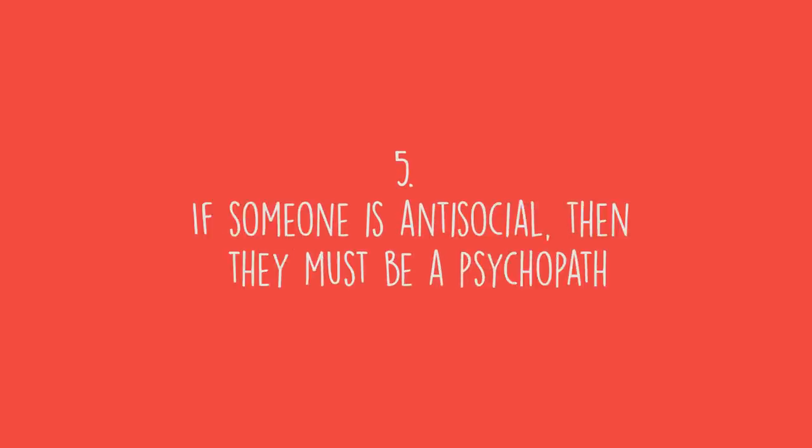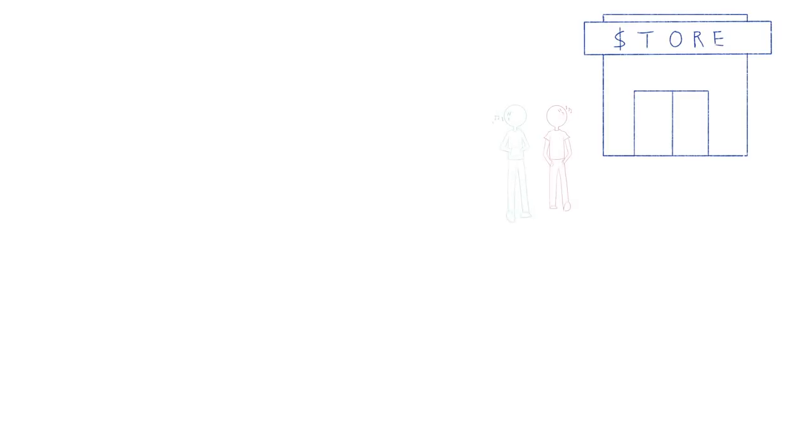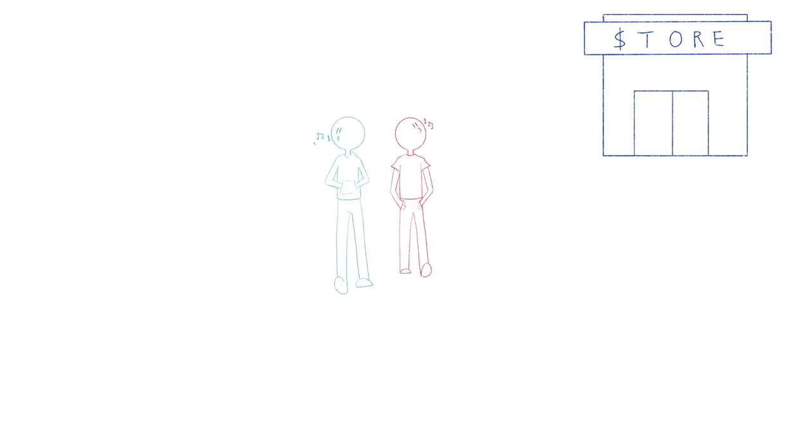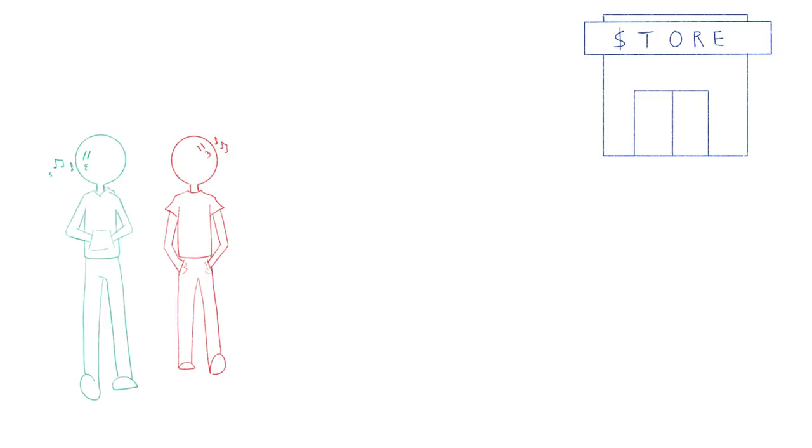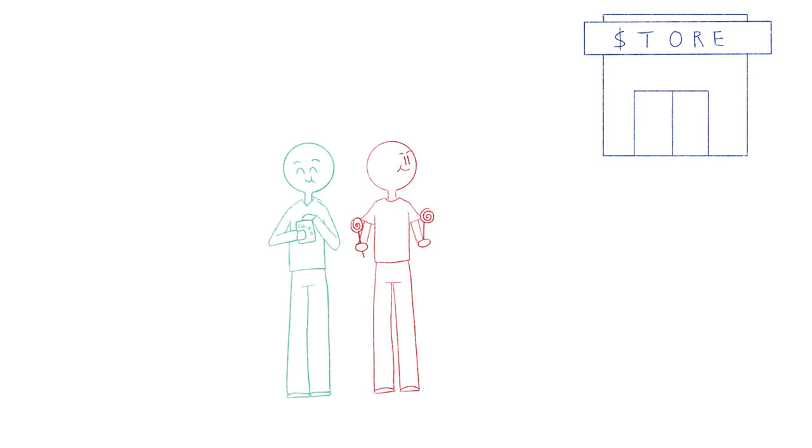Number five: If someone is antisocial, then they must be a psychopath. Psychopathy and antisocial behavior have overlapping similarities, which can make them easily confused with one another. For instance, both involve the same symptoms such as recklessness, breaking rules and regulations, and disregarding other people's feelings and safety. But psychopathy is more extreme in the individual's interpersonal and emotional skills.